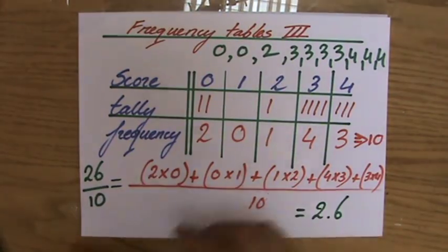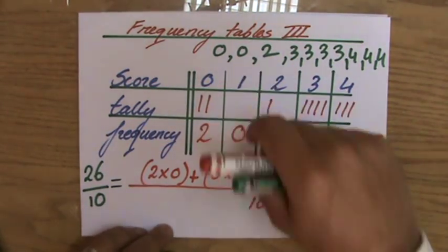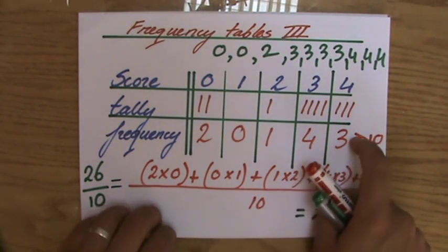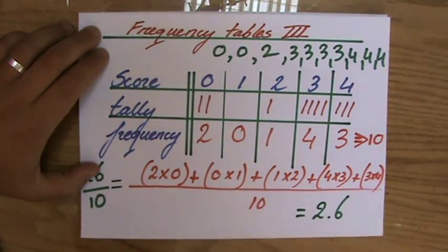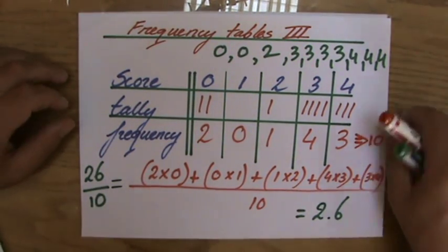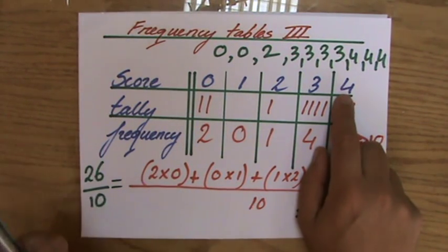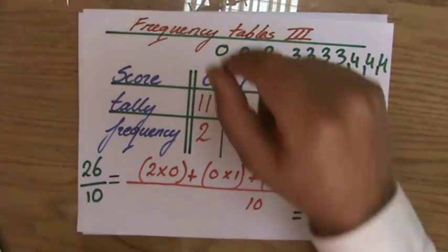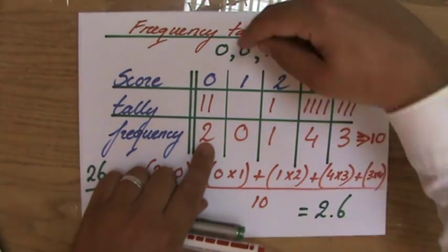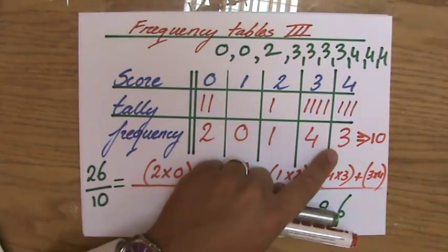The mistake students make is they do the numerator correctly — two times zero, zero times one, one times two, four times three, three times four — but then they divide by five, because they count the number of classes rather than the number of people. So they get 26 divided by 5, which is 5.2. But that's a silly answer — how can your mean be more than your highest score? The correct denominator is ten, because you have ten pieces of information, not five.